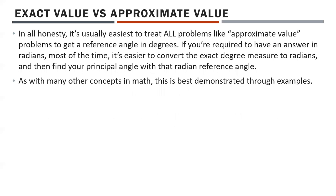In all honesty, it's usually easiest just to treat all problems as approximate value problems to get a reference angle in degrees. Every single question, you can just use inverse trig on it. If it happens to be an exact value, it'll tell you — it'll be like, oh, it's 30 degrees or 60 degrees or whatever. Now, if you're required to have an answer in radians, it's actually easier to convert the exact degree measure to radians and then find your principal angle with the radian reference angle. As with many other concepts in math, this is best demonstrated through examples. Buckle up. Here we go.